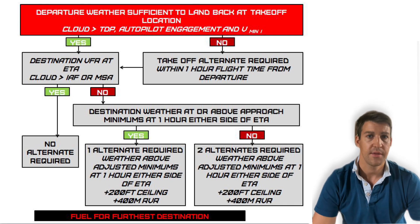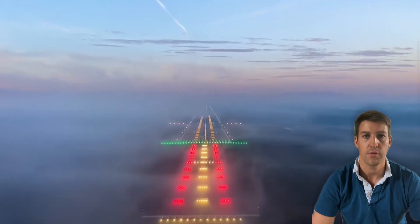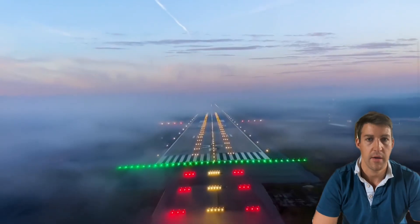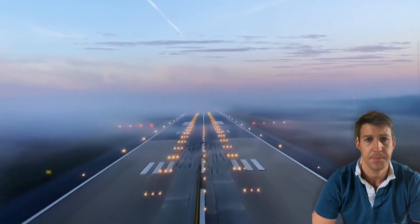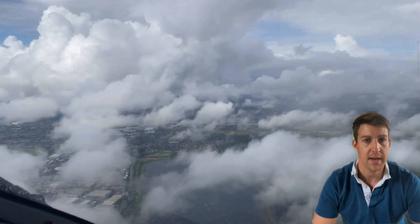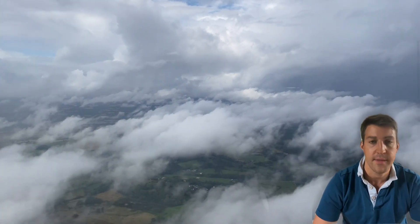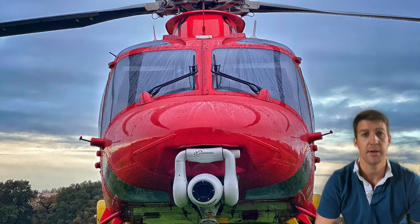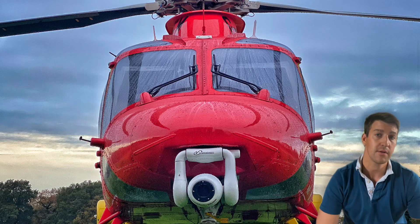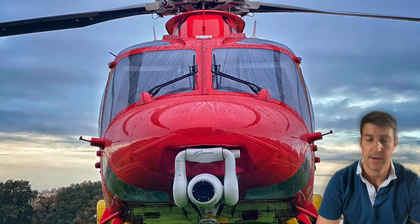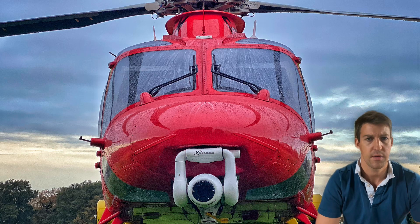You need to increase the RVR minimum from the published value by 400 metres, and increase the minimum ceiling by raising the minimum descent altitude or decision height by 200 feet above the published numbers. If the selected alternate has a forecast of worse weather one hour either side of your arrival that is below these new limits, you can't use that airfield, and if you can't find another alternate that works within your maximum fuel load, you legally can't conduct the flight.